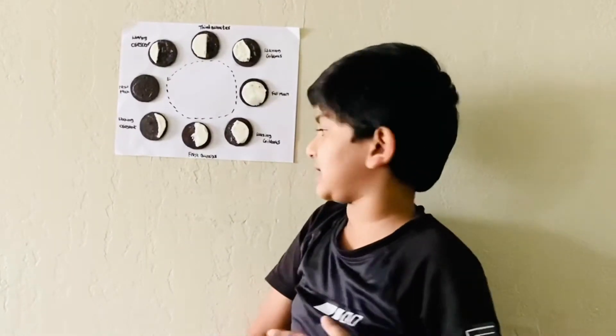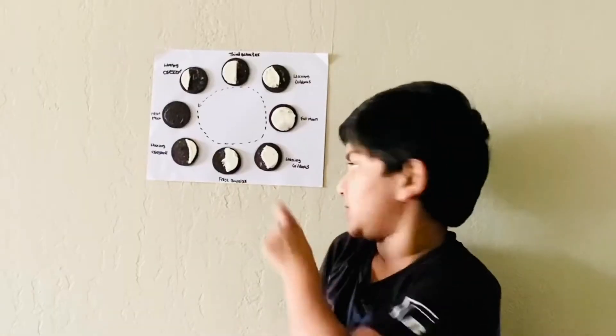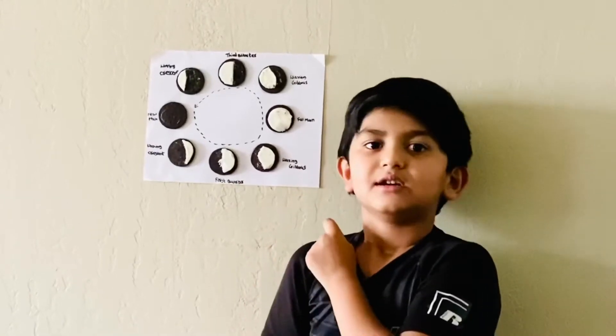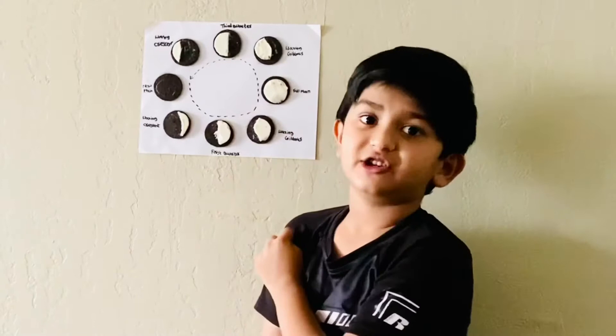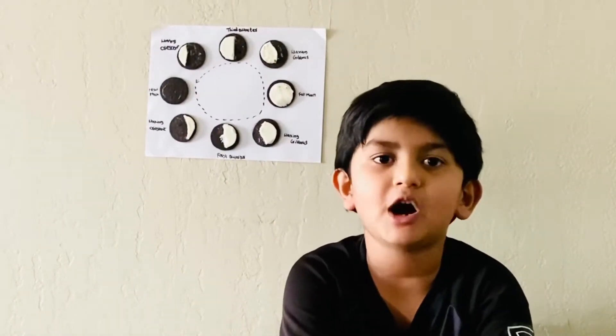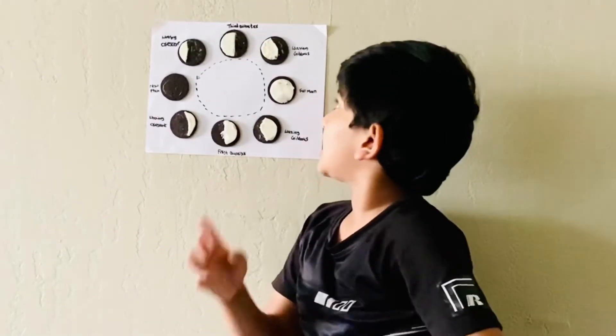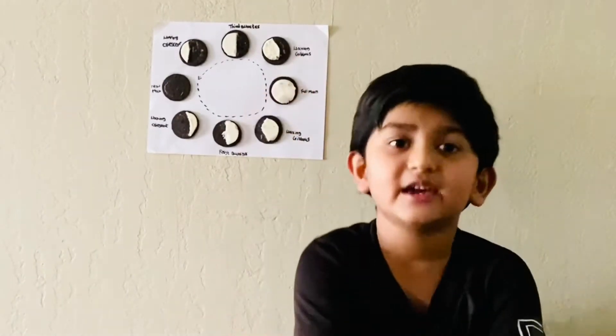The next stage is Waxing Gibbous. It's almost a Full Moon stage. The next stage is Full Moon. The brightest stage in the Moon's cycle.